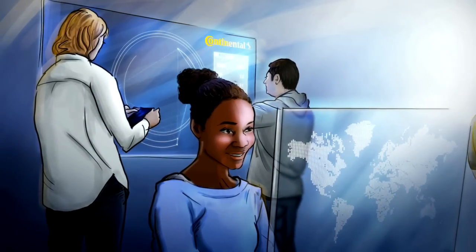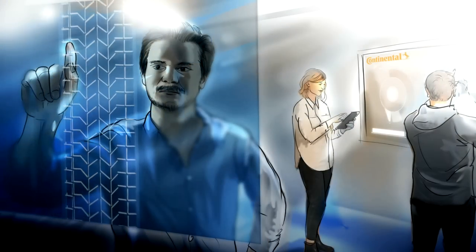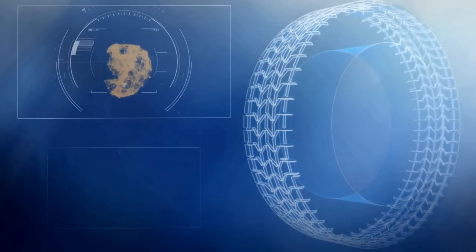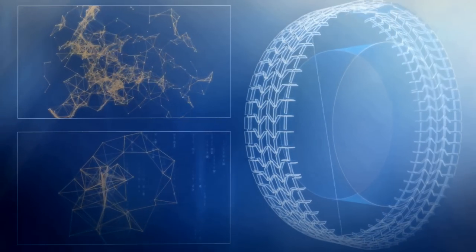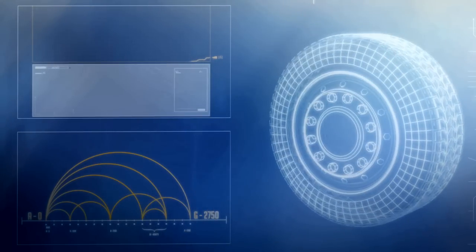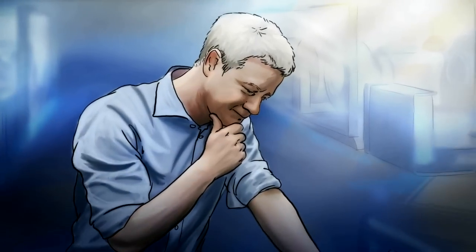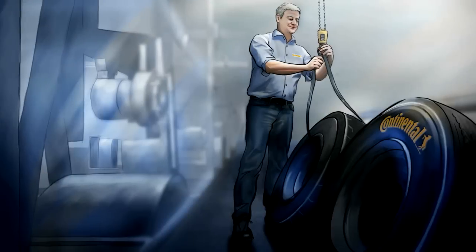Computer simulations produce the fastest results. What effect does a harder rubber compound have on rolling resistance? Do jagged grooves on the tread pattern increase driving safety? His colleague, the computer, calculates the results in just a few hours. But are the results reliable?